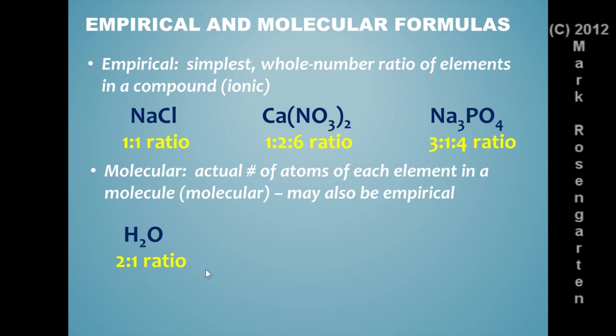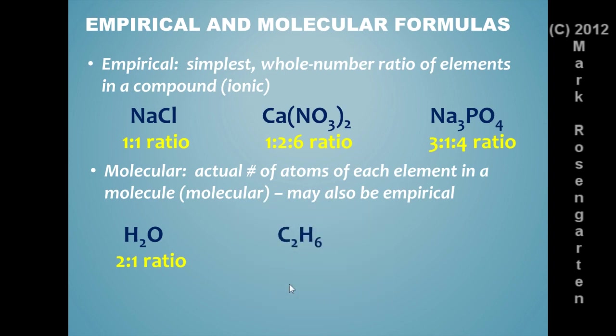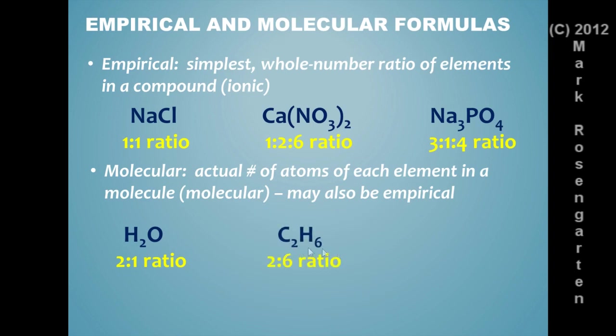But this molecule here, which contains two carbons and six hydrogens for a formula of C2H6, this is a molecular formula. And notice it's in a two-to-six ratio. That is not the simplest whole number ratio. This is not an empirical formula. Which is fine because the molecule does have two carbons and six hydrogens. But if you're asked to make the empirical formula, well, to simplify the two-to-six ratio is really simple. It's just a one-to-three ratio.